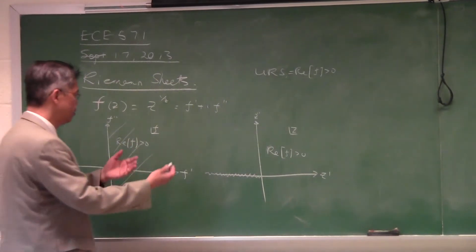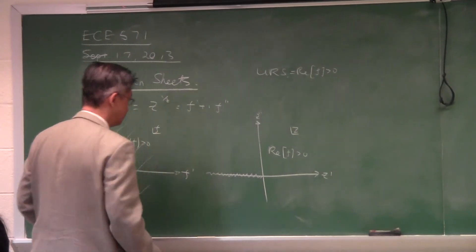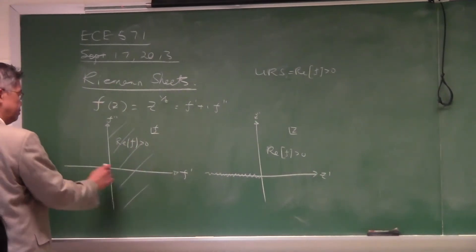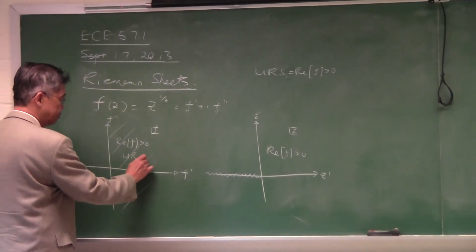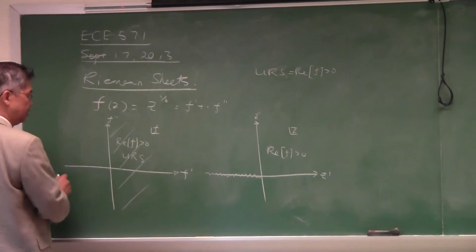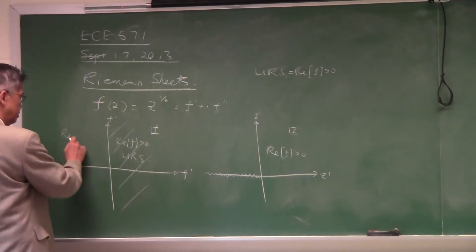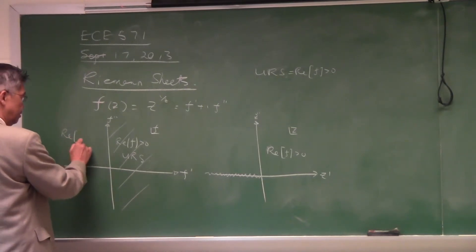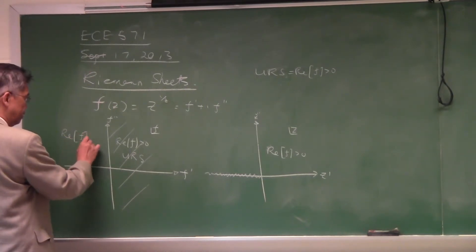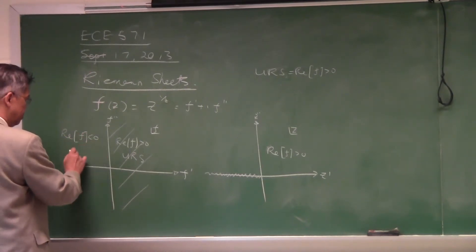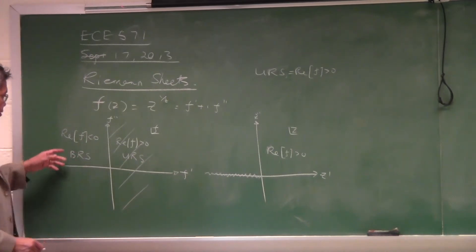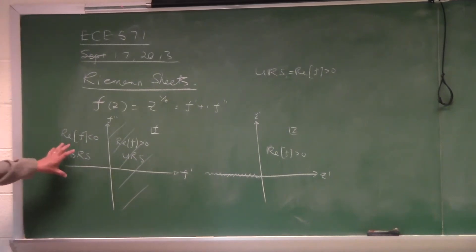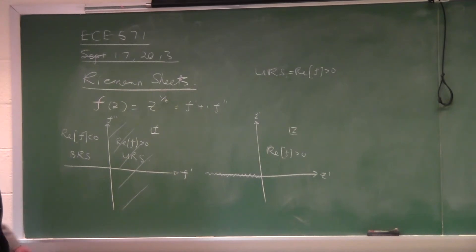Everything on the lower Riemann sheet maps to the left half plane on the other side. This is the upper Riemann sheet, and everything on the left half plane is mapped to the lower Riemann sheet.